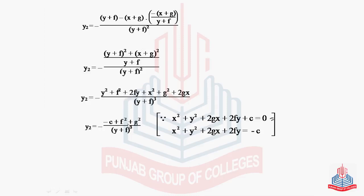So this is our required second derivative of the given expression. Multiplying through, the negatives give: y2 = (c − f² − g²) / (y + f)³.